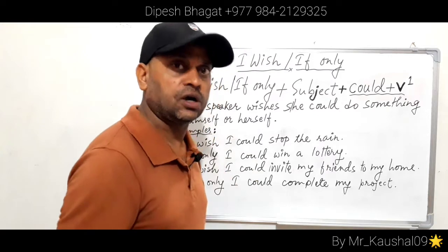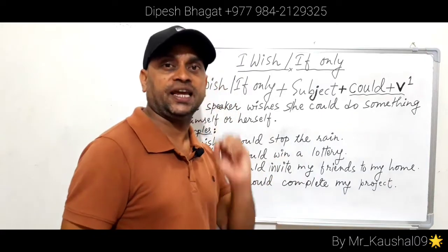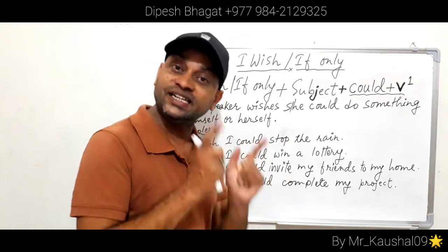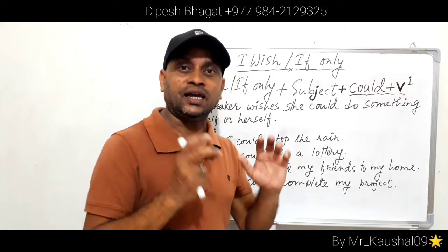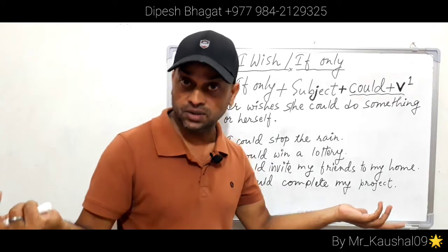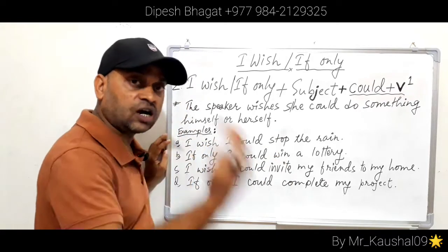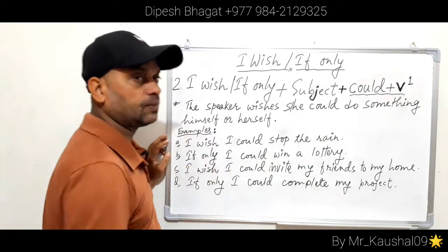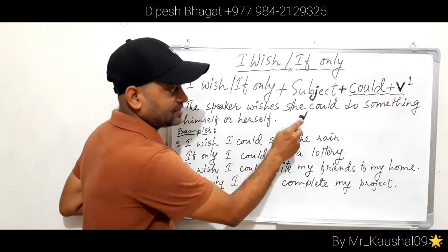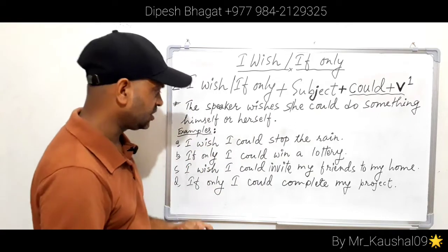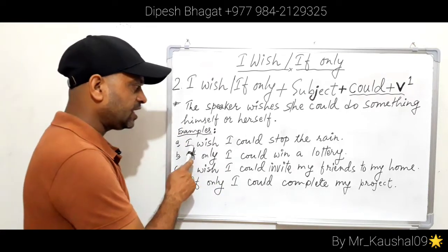The second structure — 'could + verb' — is used when the speaker wishes to do something himself or herself, but knows it is impossible. For example, it's raining and the speaker wants to stop the rain, but knows it is impossible. So the speaker says: 'I wish I could stop the rain.' The speaker wishes he or she could do something themselves — that's when 'could + verb' is used.